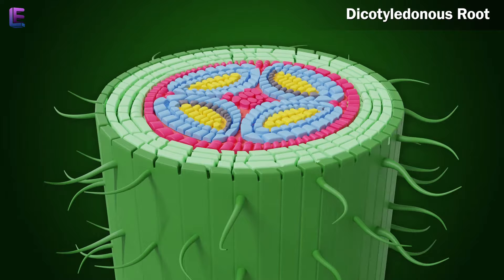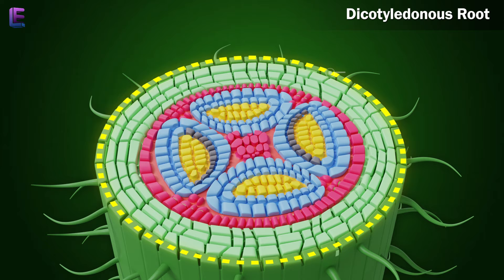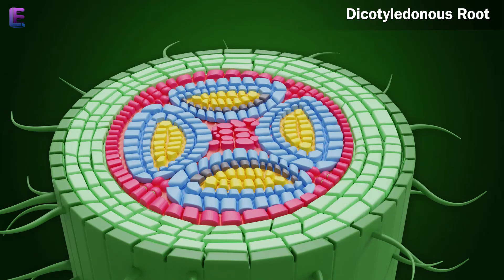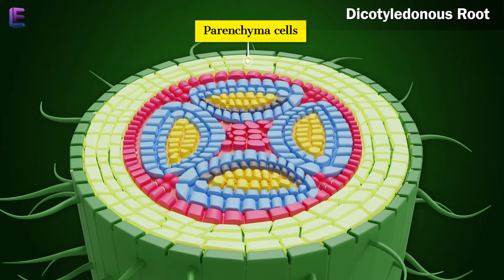The internal tissue organization is as follows. The outermost layer is epidermis. Many of the cells of epidermis protrude in the form of unicellular root hairs. The cortex consists of several layers of thin-walled parenchyma cells with intercellular spaces.